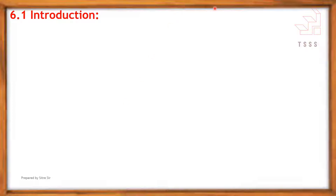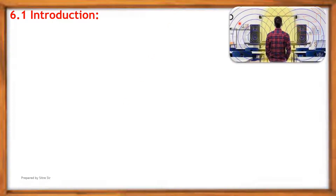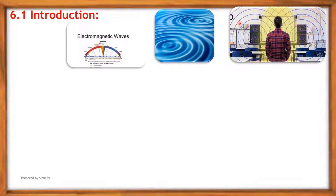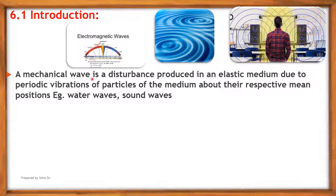All of you might have heard or seen music, ripples on water, and the visible spectrum of electromagnetic waves. All these are waves, and these waves are broadly classified into two types. The first one is a mechanical wave. A mechanical wave is a disturbance produced in an elastic medium due to periodic vibrations of particles of the medium about their respective mean positions. Mechanical wave is a periodic disturbance of the elastic medium, and the medium particles are in vibration. For example, water waves and sound waves.